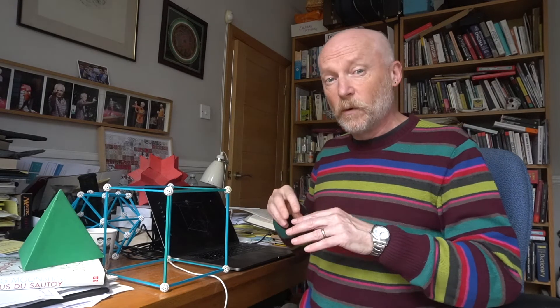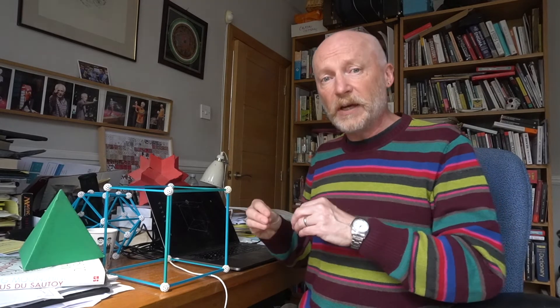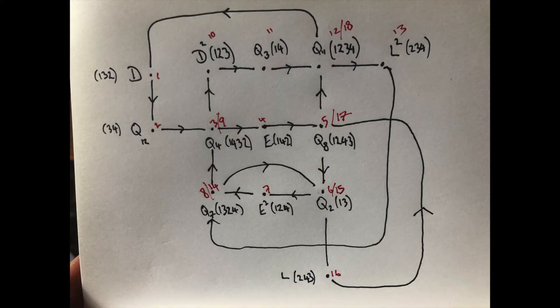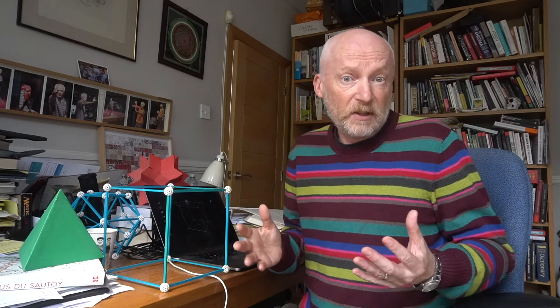Now it takes 18 symmetries before the sequence repeats itself. This is actually the longest cycle of symmetries you can realize in a cube. If you choose two different seed symmetries then the sequence can be shorter, so it's intriguing to know how much experimentation Xenakis did to discover this longest path.